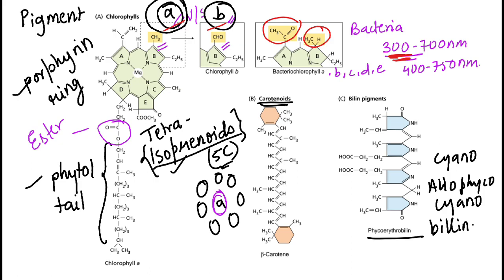The major pigment that sits in the reaction center and gets excited is chlorophyll A. That covers lecture one. In the next lecture, we'll continue with the Z-scheme and certain experiments performed to prove that there are two photosystems. Stay connected — bye!